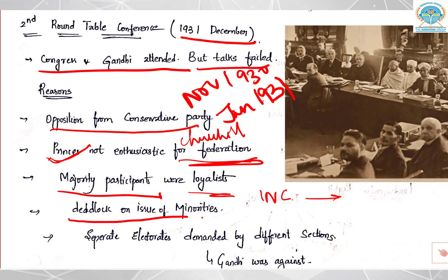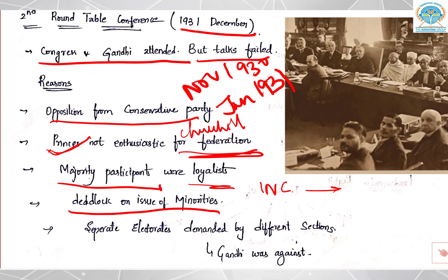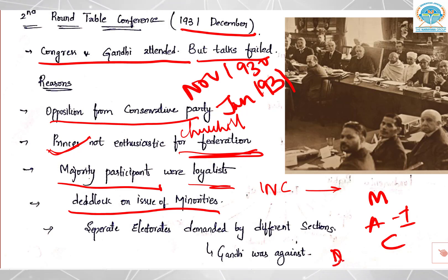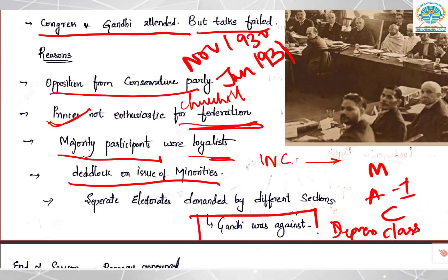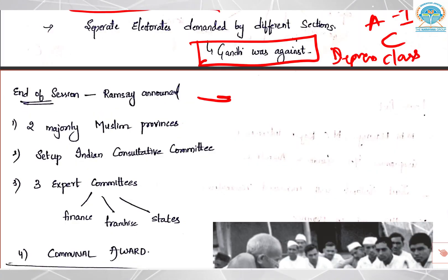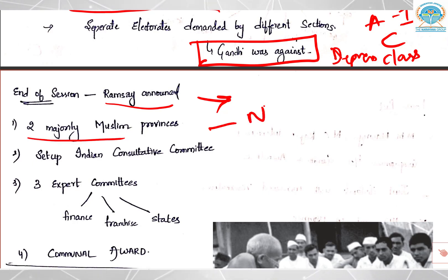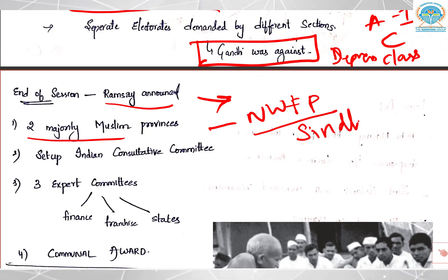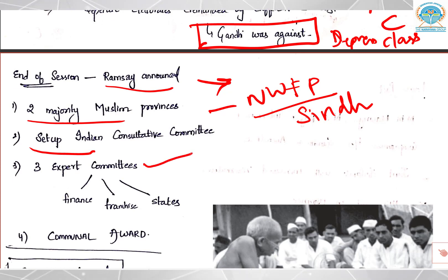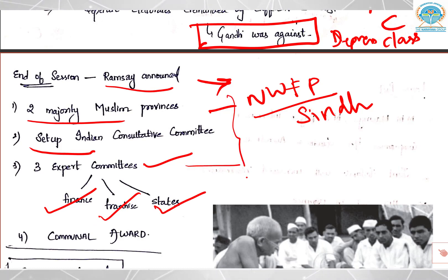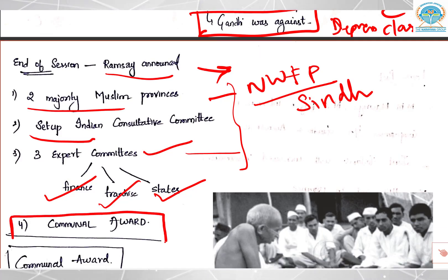The session got deadlocked on the issue of minorities, as separate electorates were demanded by Muslims, Anglo-Indians, Christians, and also the depressed classes. At the end of the session, Ramsay MacDonald announced that two majority Muslim provinces would be formed — Northwest Frontier Province and Sindh — to appease the Muslims. He also announced an Indian Consultative Committee and three expert committees on finance, franchise, and states. The fourth important announcement was the Communal Award, given by Ramsay MacDonald in 1932 — yet another expression of the divide-and-rule policy of the British.